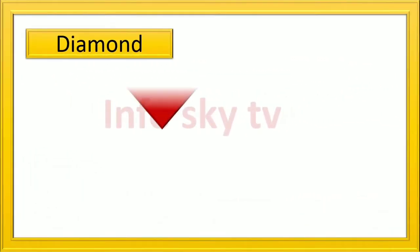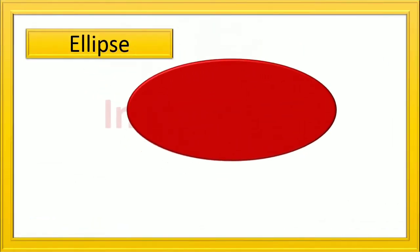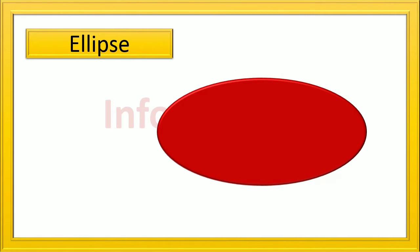Diamond: it has four equal sides. Ellipse: it is a rounded stretch.